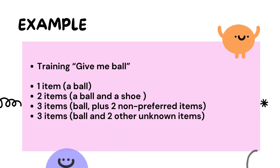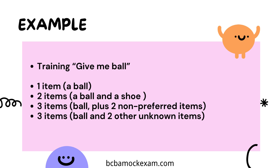Let's delve into discrimination using the training scenario 'GiveMeBall' to illustrate the concept. In the presence of one stimulus condition — the command 'GiveMeBall' — while not performing the same behavior in the presence of another stimulus condition with different items. In this initial stage, the dog is introduced to the command 'GiveMeBall' and learns to associate it with the action of bringing a ball. When presented with only a ball and given the command, the dog is reinforced for bringing the ball, reinforcing the connection between the command and the behavior.